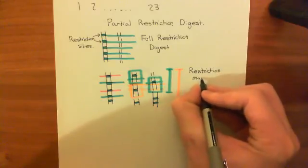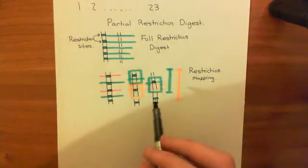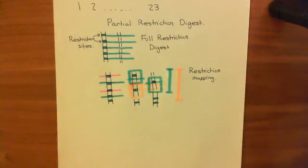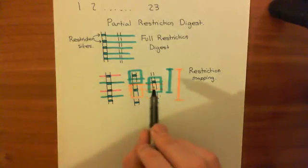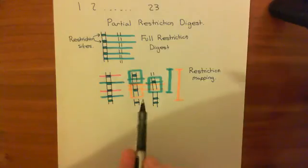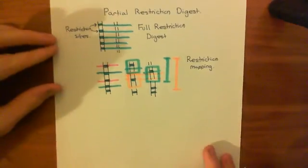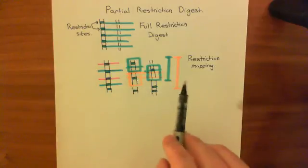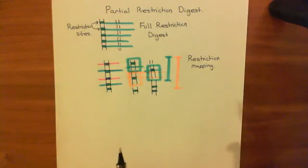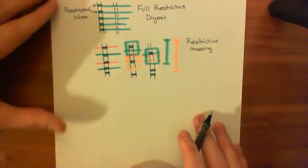Now that I've explained the advantage of a partial restriction digest on multiple copies of chromosome 1, and how that allows you to piece fragments back together, let's talk about how we actually sequence these fragments. This is exactly what they did in the Human Genome Project — what changes now is how you sequence the fragments. They are placed onto something known as a flow cell.